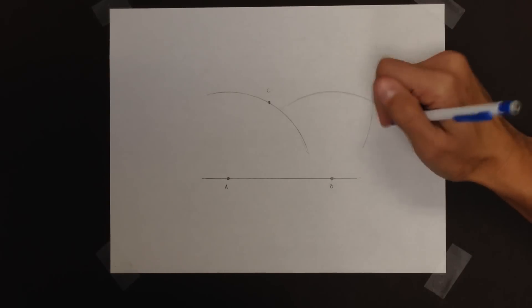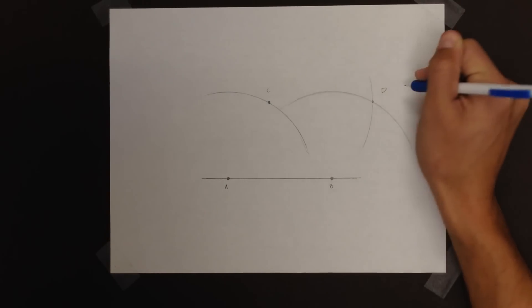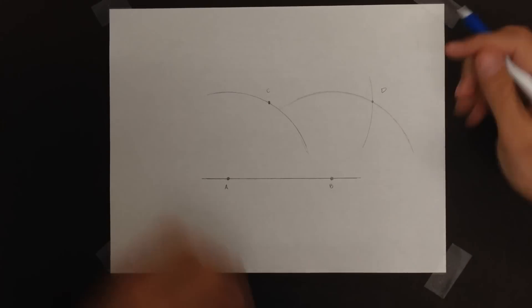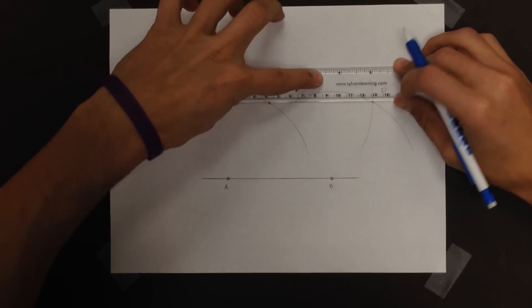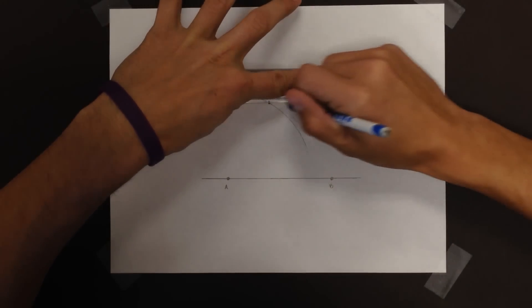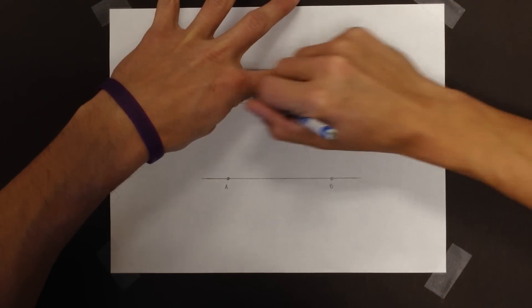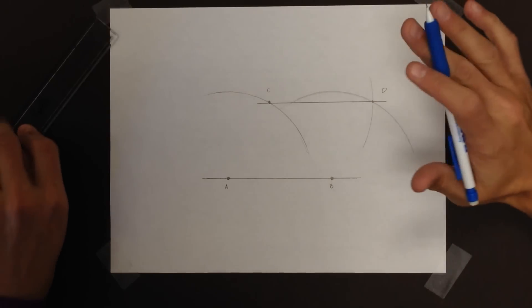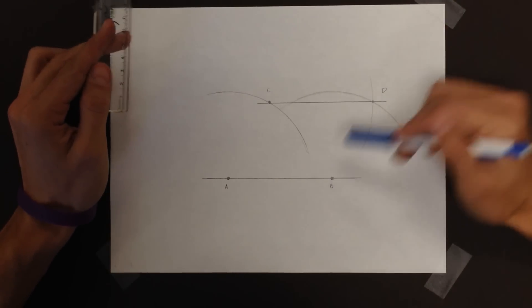I'll call the intersection point D. And when I draw that line, connecting those two, that line should be parallel. I'll draw it a little longer just to emphasize, but I still have my points and I'm a little askew, but we get the idea. That line is parallel to that one.